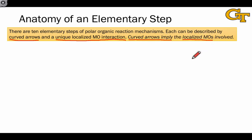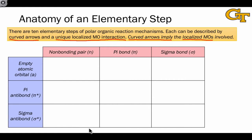In other words, if you're given the curved arrows, you can infer the localized molecular orbitals involved and vice versa. The table shown here lays out the nine possibilities for filled orbitals, shown in the pink columns, overlapping with empty orbitals shown in the blue rows. Going through this table will really help us firm up this connection between localized molecular orbital overlap and the curved arrows involved.